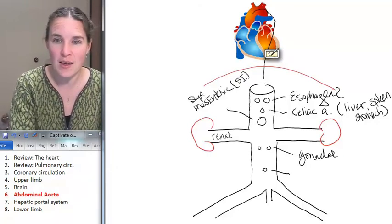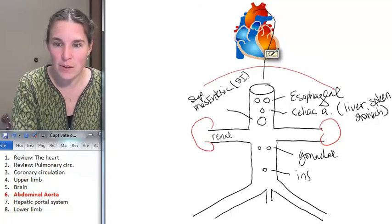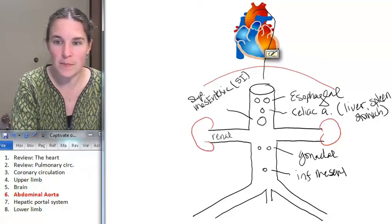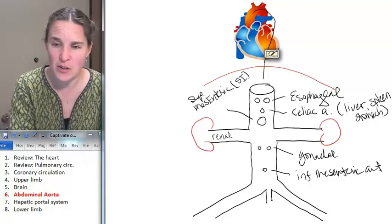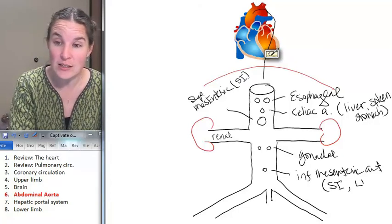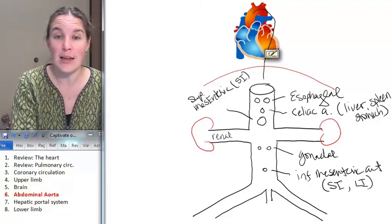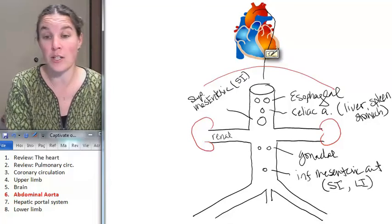And then my belly button is the inferior mesenteric artery. The inferior mesenteric artery does some small intestine and the large intestine. So probably the ileum of the small intestine and all of the large intestine.